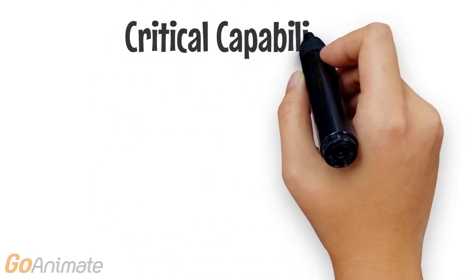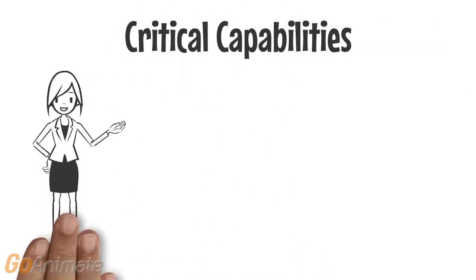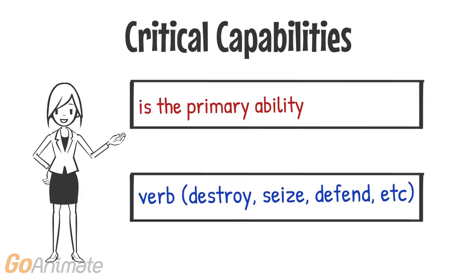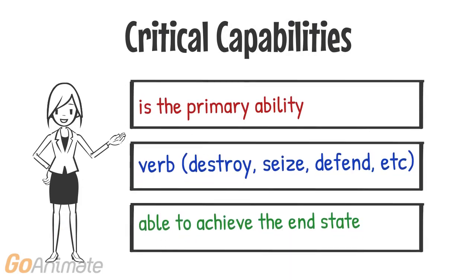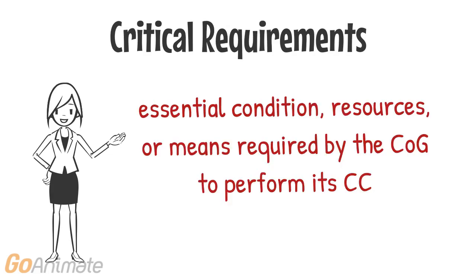The critical capability represents the primary ability, such as destroy, seize, or defend, required to achieve the end state. In other words, it's what the center of gravity is able to do. Critical requirements are the essential conditions, resources, and means the center of gravity requires to perform its critical capability.